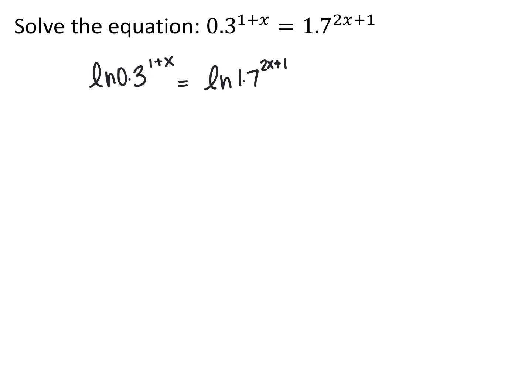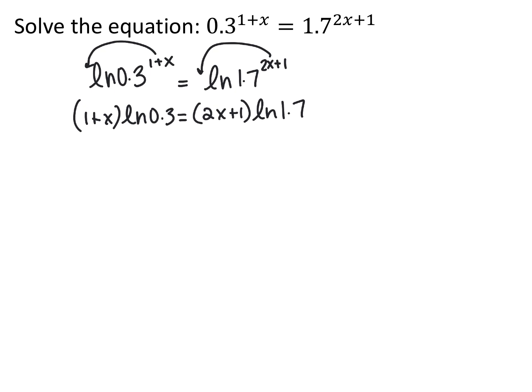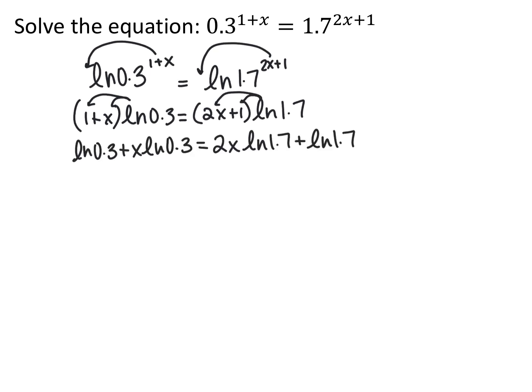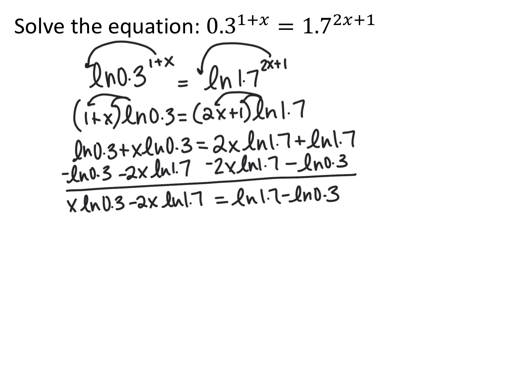Now that I have natural log on both sides, I have exponents inside the logarithms, so I bring each exponent down in front. Natural log of a number is just a number, so just like if it were a regular coefficient, I can distribute into the parentheses on both sides. Keeping in mind that natural log of a number is just a number, I have a linear equation in x. I move everything with an x to one side and everything without an x to the other side. I leave the right side as natural log of 1.7 minus natural log of 0.3.